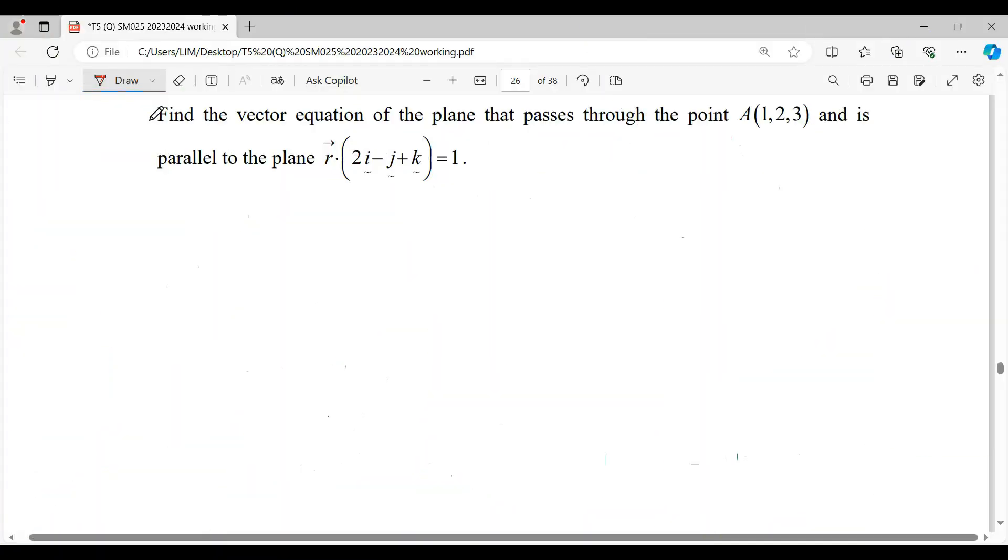Hi everyone, for this question we're going to find the vector equation of the plane that passes through the point (1, 2, 3) and is parallel to another plane.